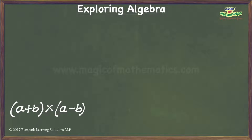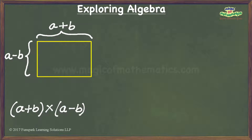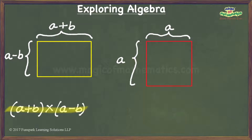I will draw a rectangle with length as a plus b units and width as a minus b units. Let us assume that this rectangle represents a rectangular sheet of paper. We know that the area of this rectangular sheet of paper is a plus b times a minus b square units. Let me now draw a square having sides measuring a units each, and let us assume that this square represents a square outline in which we need to fit in the rectangular sheet of paper.